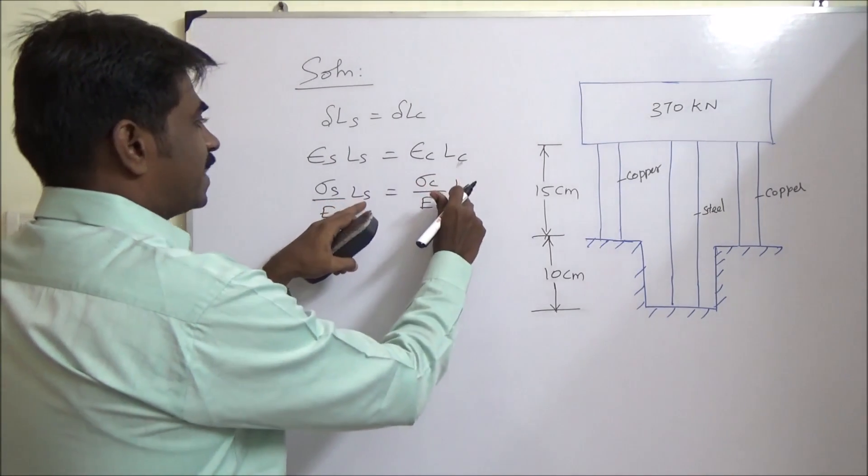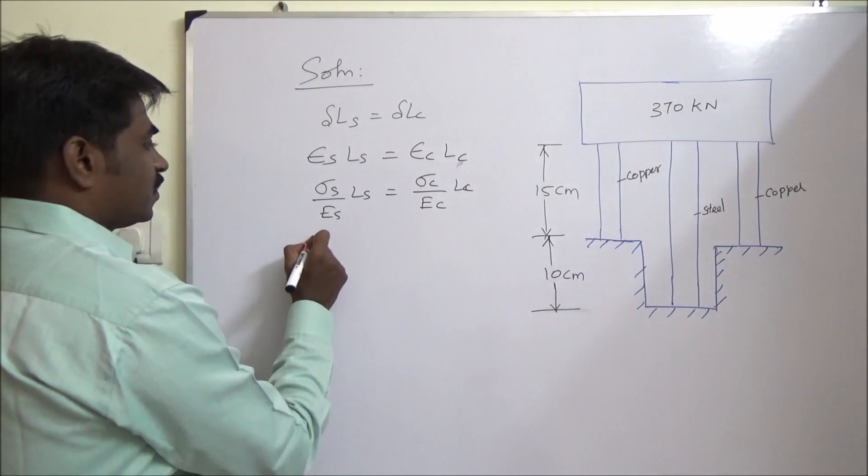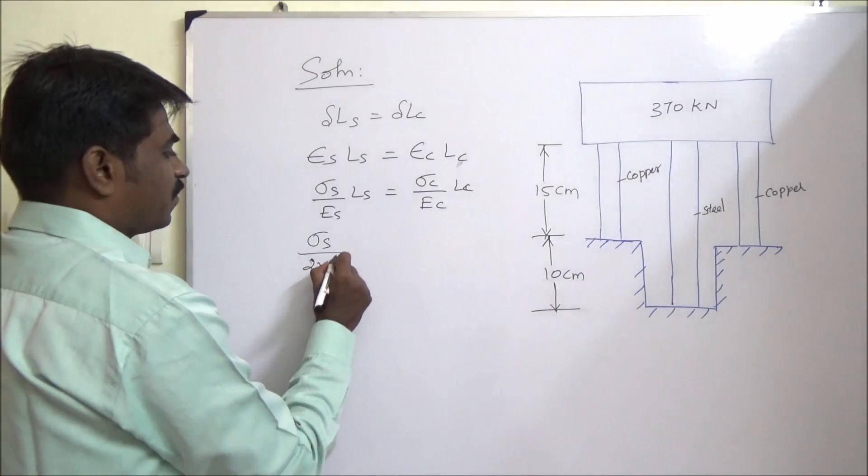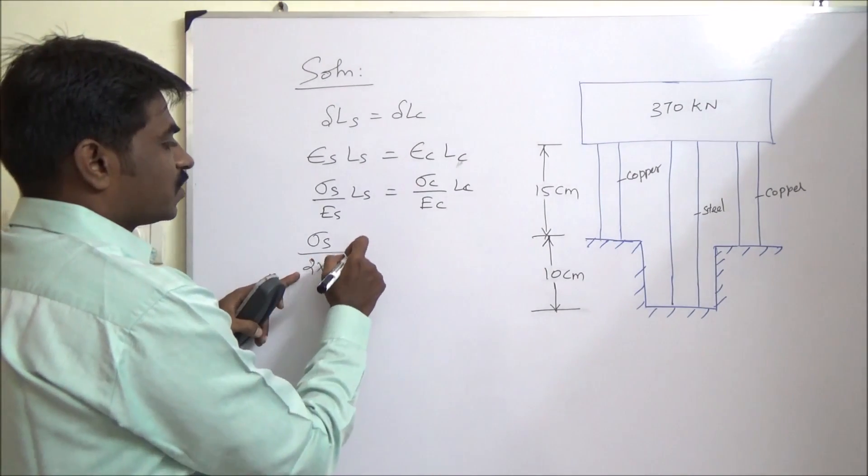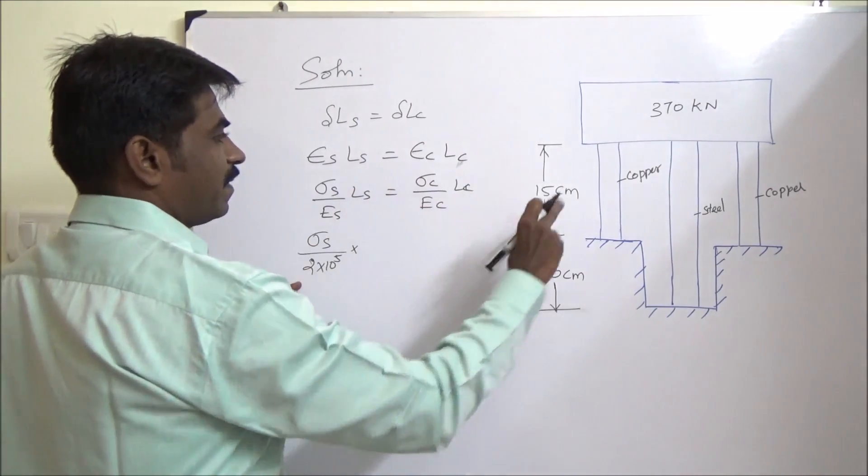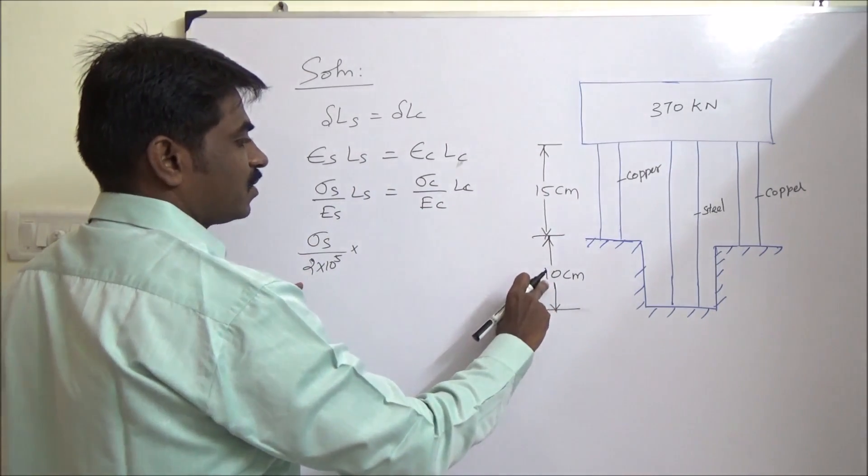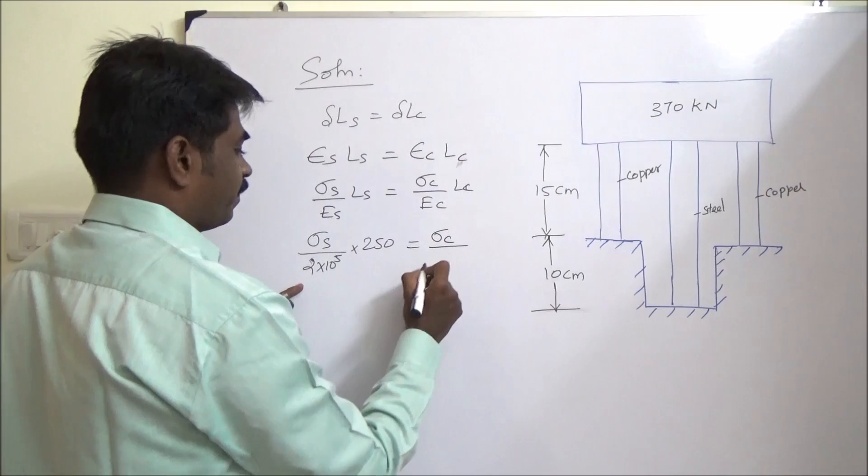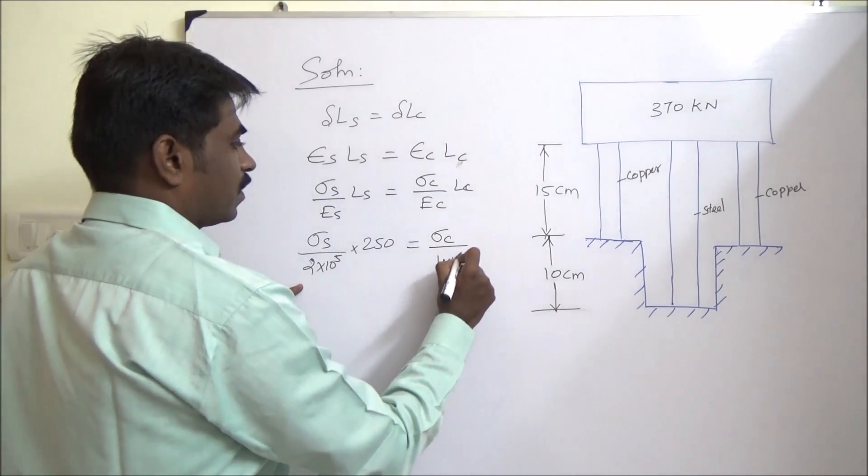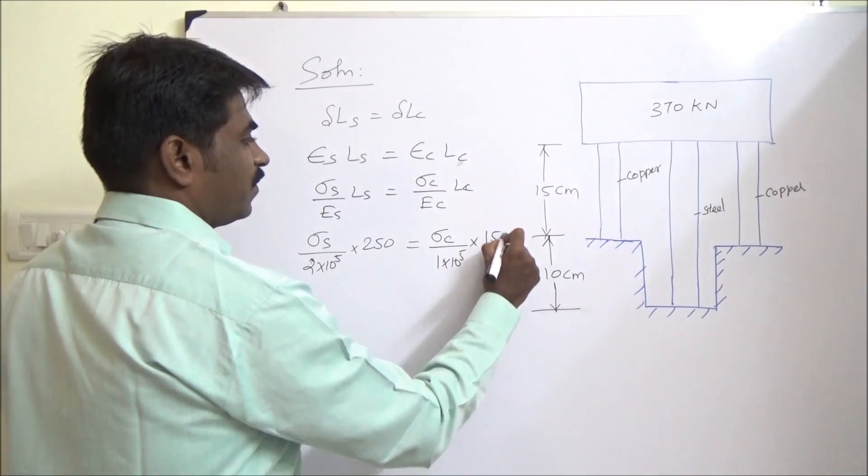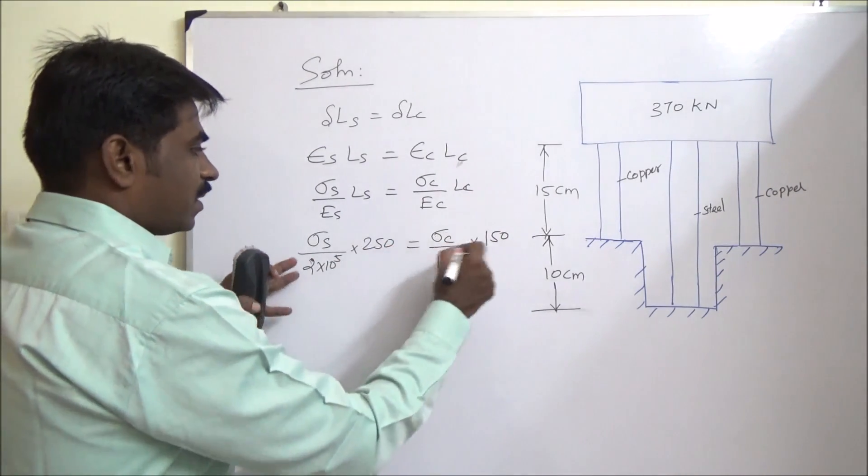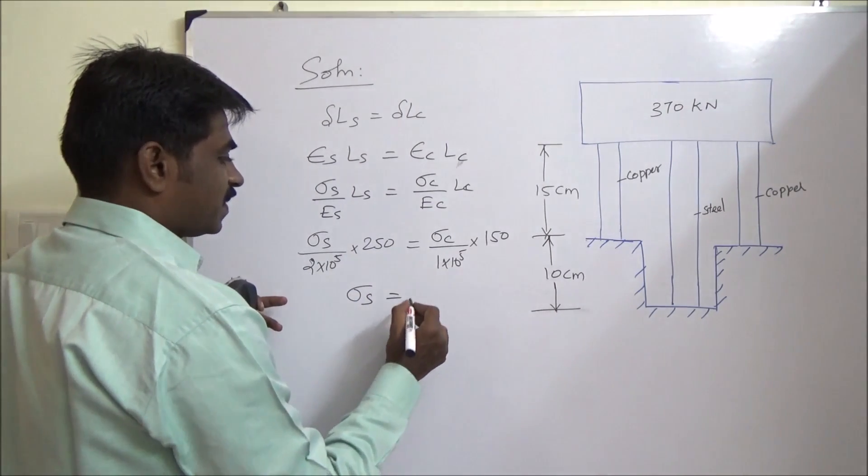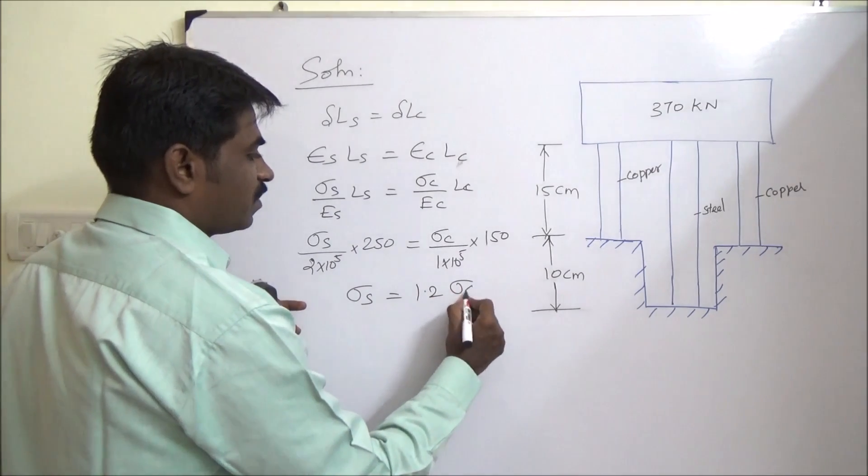So when we substitute this length, it is available here. So sigma S by 2 into 10 to the power 5, it is Newton per mm square, substitute for length: 15 plus 10, 25, 250 mm. Sigma C, 150. So upon calculating, sigma S is 1.2 of sigma C.